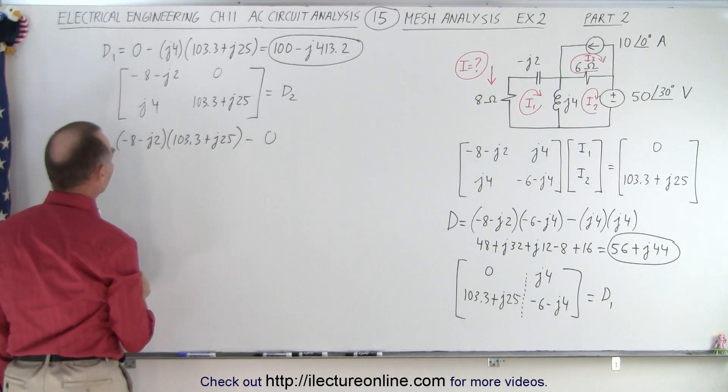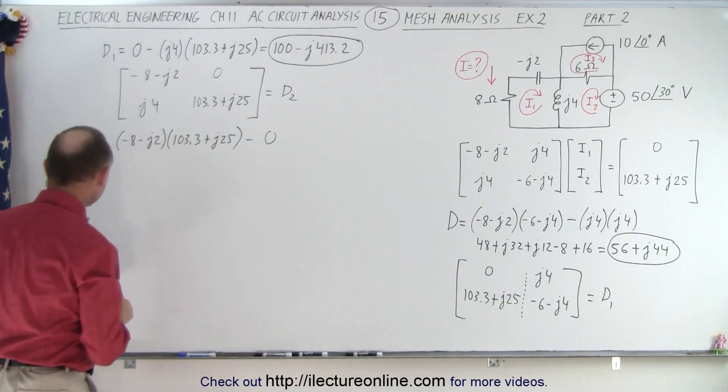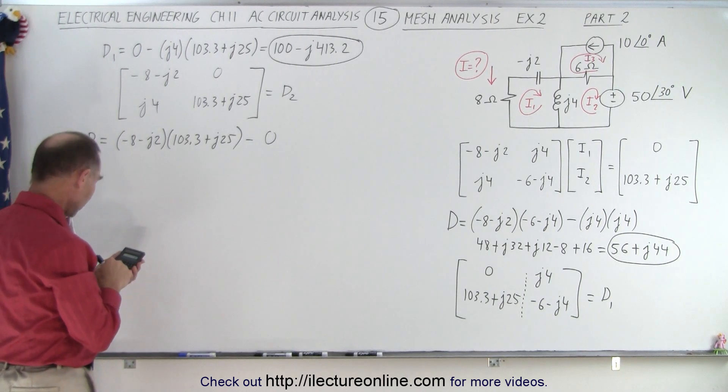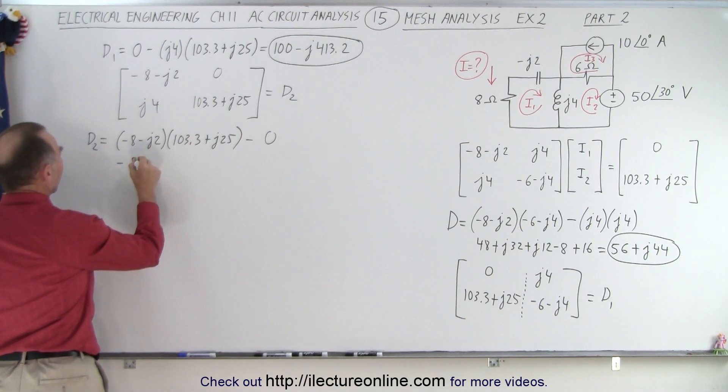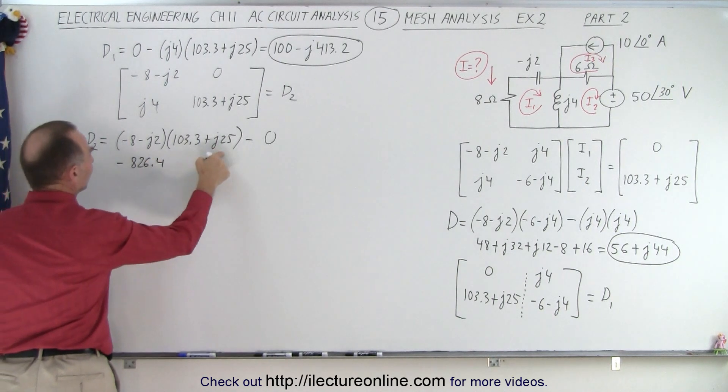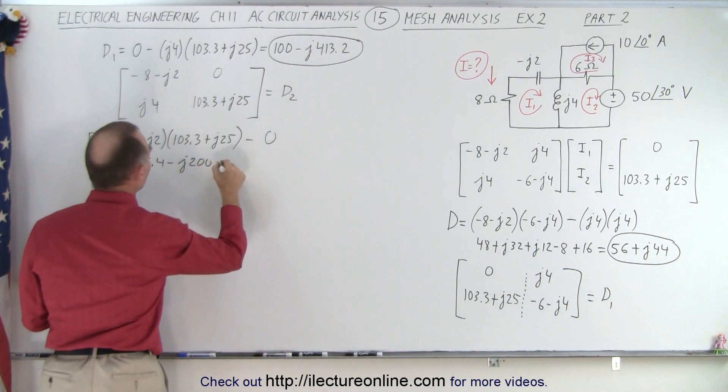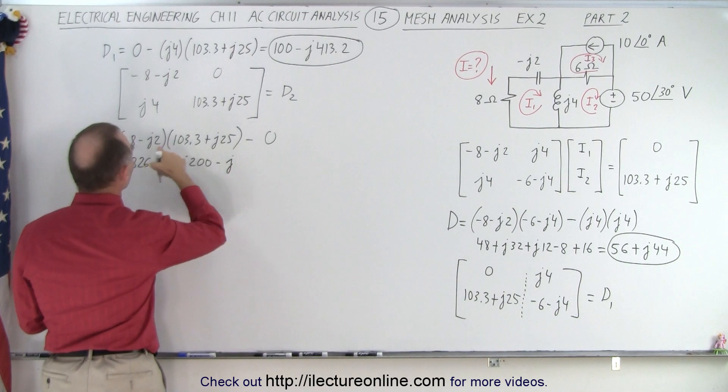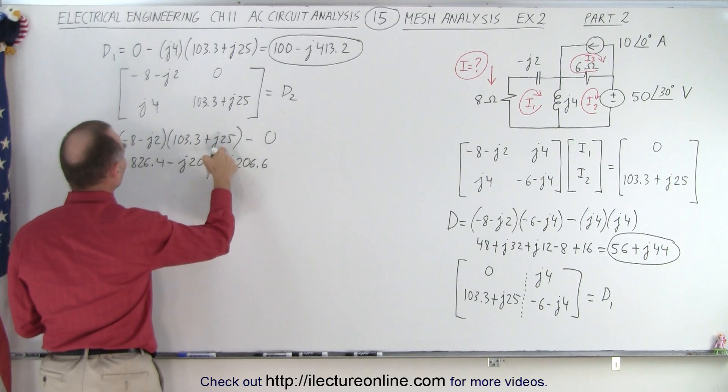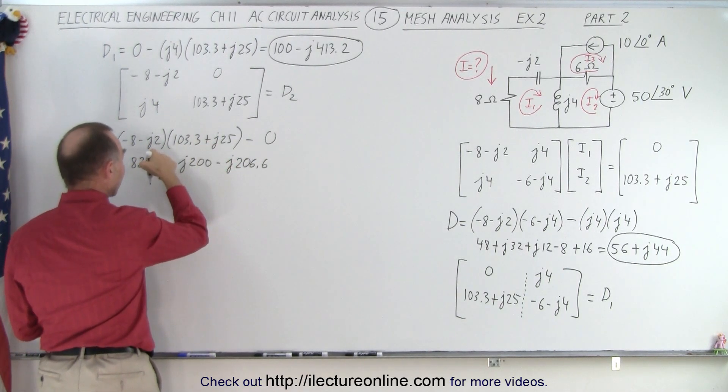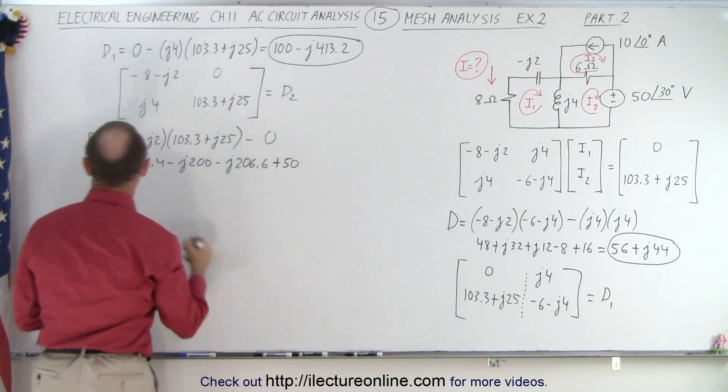Working this out, we probably want to get a calculator just to make sure we don't do it incorrectly. So we have minus 8 times 103.3, that gives us a minus 826.4. Minus 8 times this, that gives me a minus J200. This times this gives me a minus J times 206.6. And then this times this, that gives me a minus times J squared, which is a negative, that's a plus 50. And minus 0.